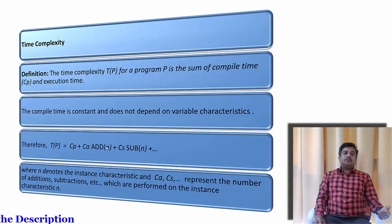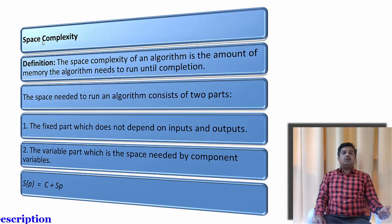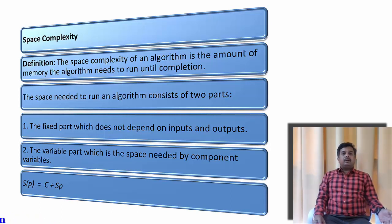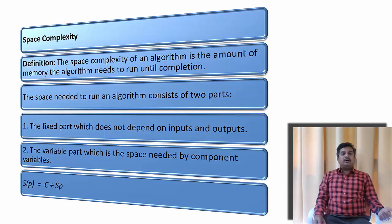Now what is space complexity? Space complexity is the amount of memory required to run a particular program. Whenever we run a particular program its space consists of two parts: one is a fixed part that doesn't depend on the input or output, and another is a variable part that depends on component variables. The space complexity S(p) equals the fixed part c plus the variable component part S(p).